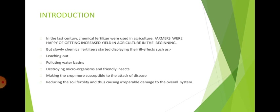In the last century, chemical fertilizers were used in agriculture. Farmers were happy getting increased yield in agriculture in the beginning, but slowly chemical fertilizers started displaying their ill effects such as leaching out, polluting water basins, destroying microorganisms and friendly insects, making the crop more susceptible to the attack of disease and reducing the soil fertility, thus causing irreparable damage to the overall system.